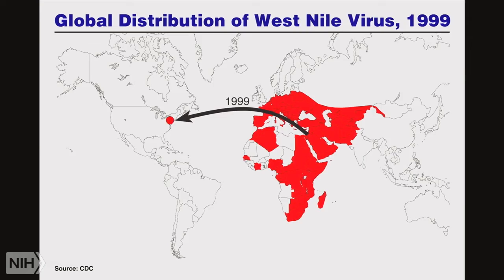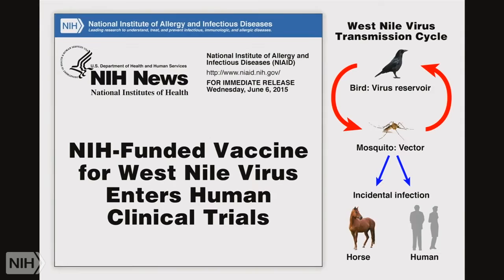And then West Nile happened exactly as I predicted. Now we have varying degrees of outbreak depending on the season, mosquitoes, and weather. We went ahead and developed a vaccine for West Nile and were quite successful. But pharmaceutical companies face a challenge: who are you going to vaccinate — everybody in the United States? There's no big market. We've developed vaccines for almost every outbreak that has occurred, but the commercial enthusiasm is limited.